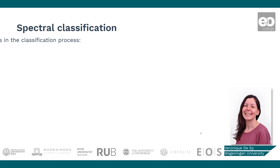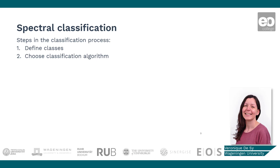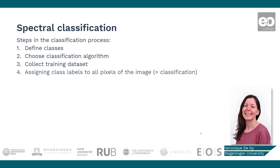First, we need to define which classes need to be mapped and how they are defined. Then we choose a classification algorithm and collect training data. Now we can perform the actual classification by assigning class labels to all pixels of the image. In order to assess the accuracy of our classification, we need to collect validation data and perform a map validation.